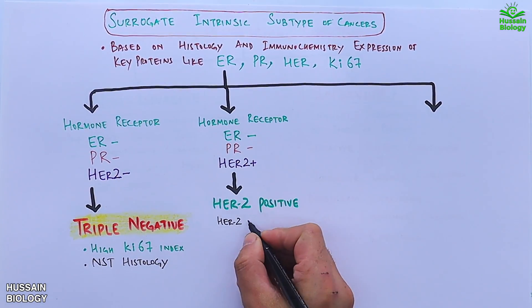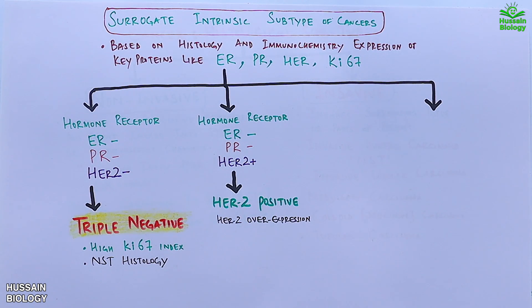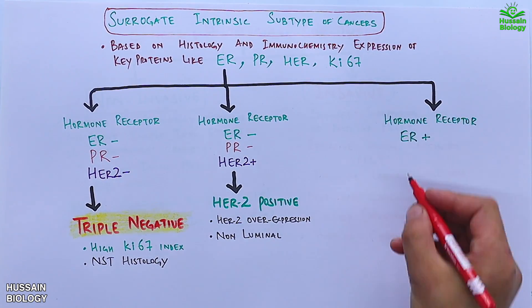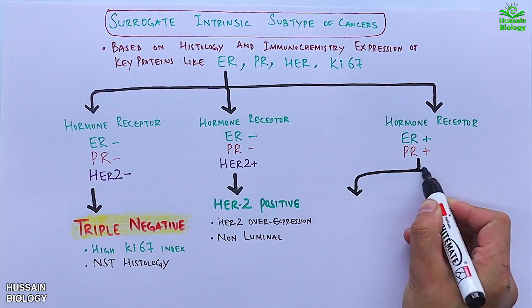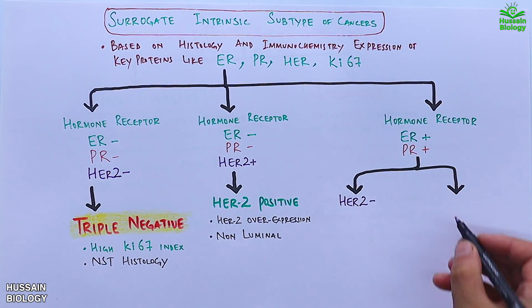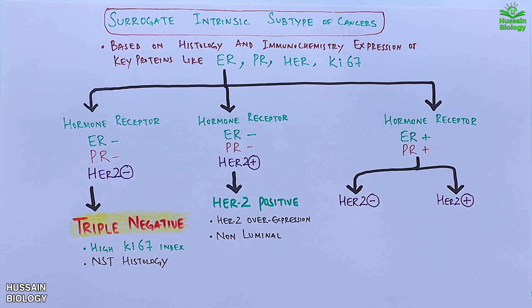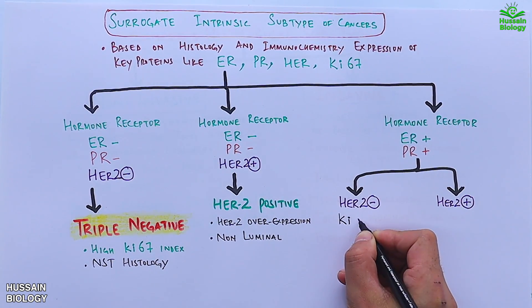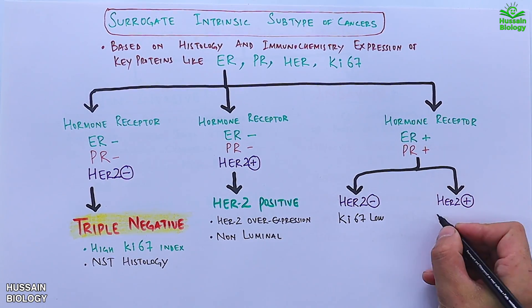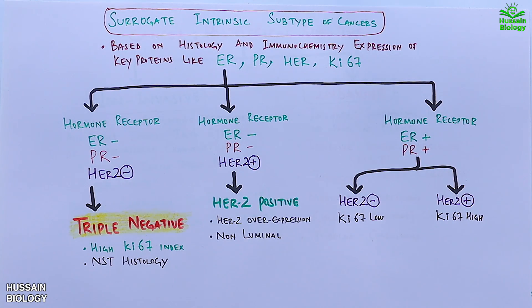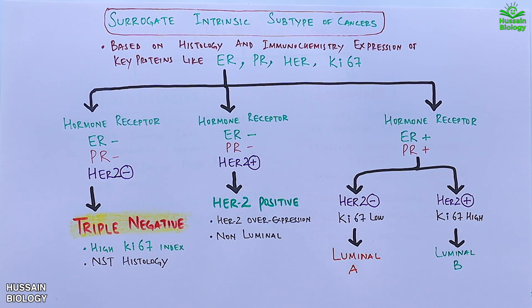The second subtype is hormone receptor ER negative, PR negative, and HER2 positive, which produces HER2 positive cancers where we find HER2 overexpression — this cancer is non-luminal. The third category is hormone receptor ER positive and PR positive, which is further divided into HER2 negative and HER2 positive. HER2 negative has a low Ki67 index, while HER2 positive has a high Ki67 index. HER2 negative makes the Luminal A cancer type, and HER2 positive makes the Luminal B cancer type.